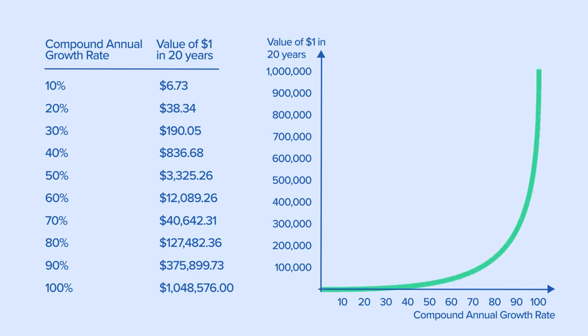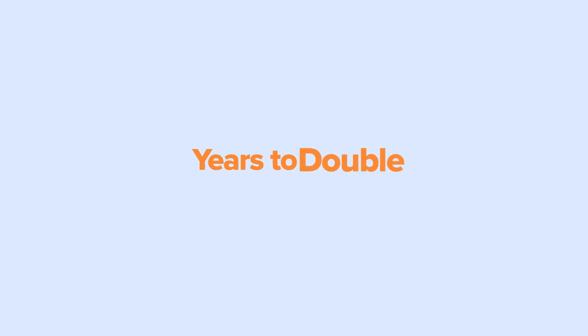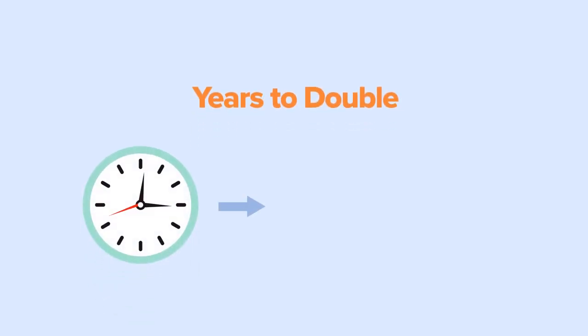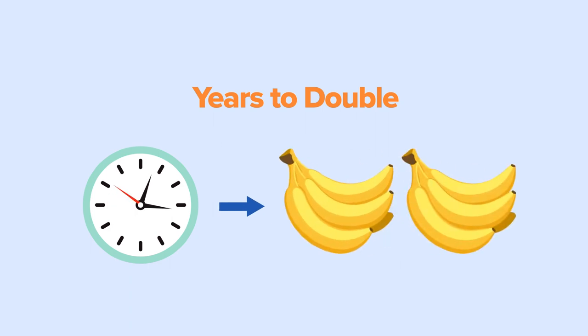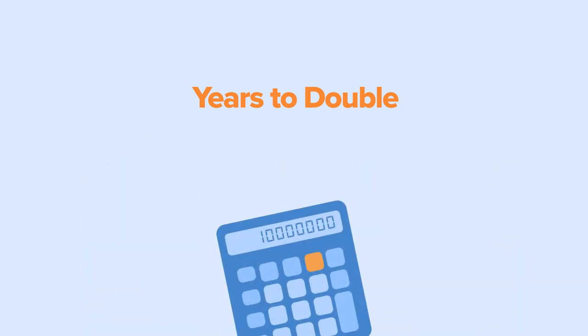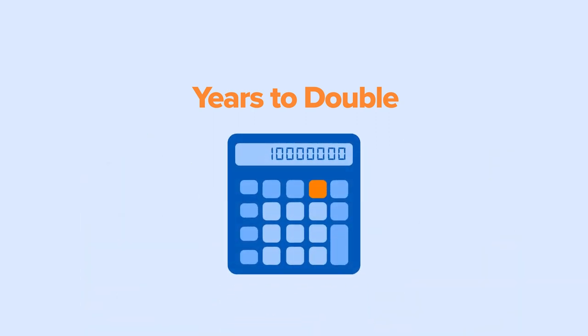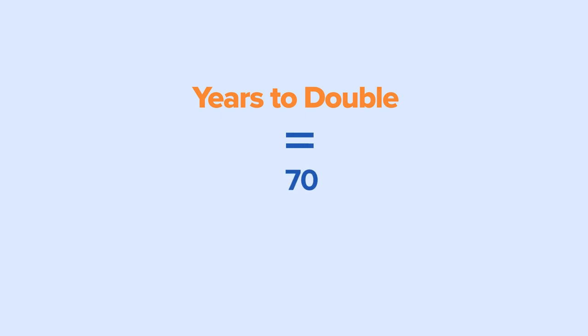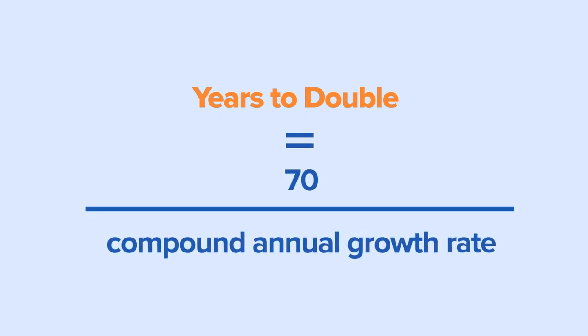There are two other measures that economists use to show the power of compounding. The first is years to double. The doubling period refers to the length of time required for something to double in size. To calculate the doubling period, we can use the rule of 70s. To calculate the number of years needed for something to double, divide 70 by the compound annual growth rate.